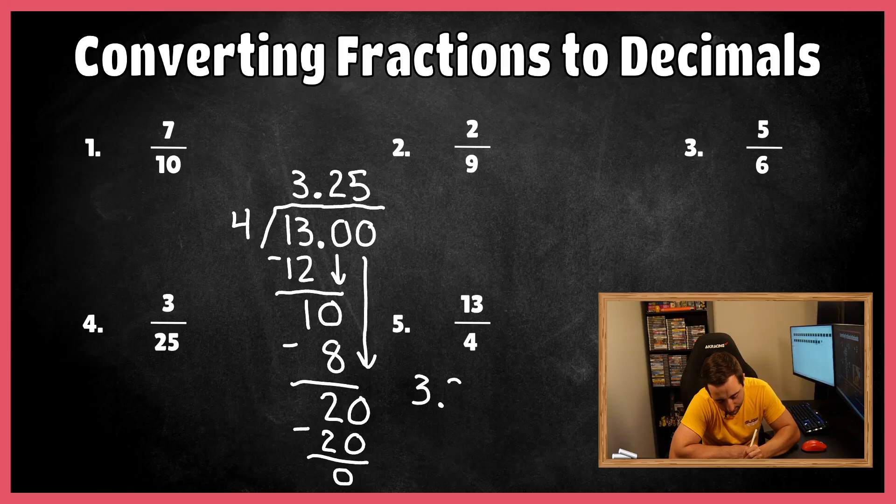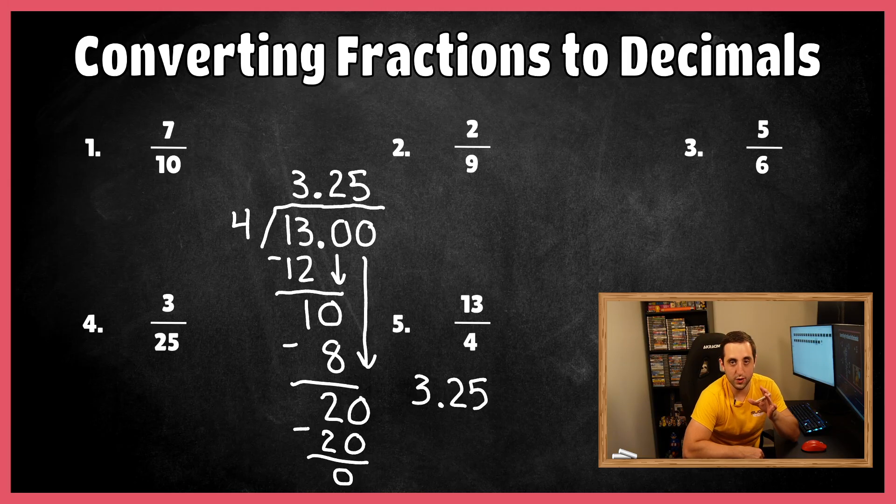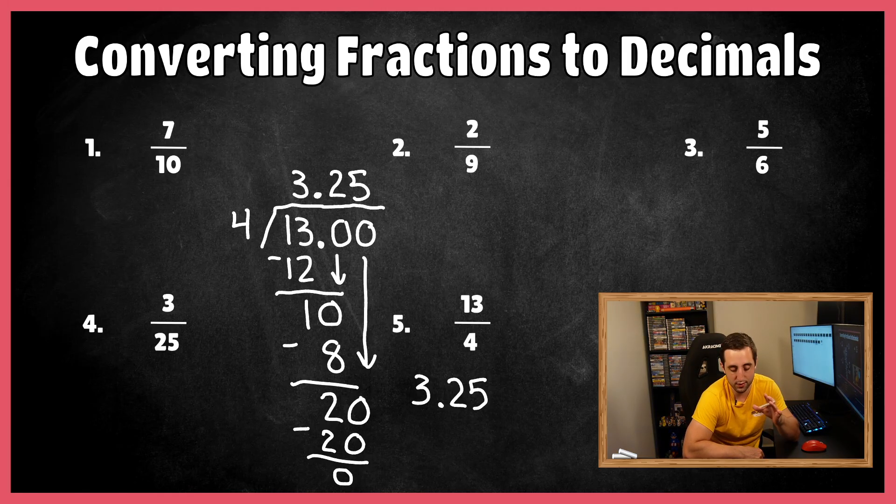20 minus 20 is going to give us a remainder of zero. And our final answer is going to be 3.25 or three and twenty-five hundredths. Now notice our improper fraction actually had a number out front of the decimal point other than zero because this fraction is larger than one. It was three and one-fourth as a mixed number, and all the other fractions are less than one, which is why there's a zero out front of all of them. With that being said, let's go ahead and give you five problems to try out on your own.